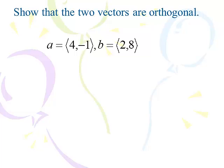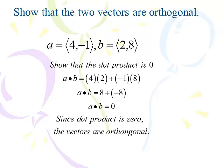Show the two vectors are orthogonal. All you have to do is show the dot product is 0, because our theorem says if the dot product is 0, the vectors are orthogonal. So: 4×2 = 8, (-1)×8 = -8, and 8 + (-8) = 0. Since the dot product is 0, the vectors are orthogonal. Alternatively, cosθ = 0/(|a||b|) = 0, and the inverse cosine of 0 is π/2, or 90 degrees.